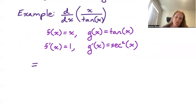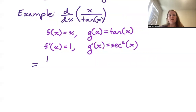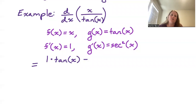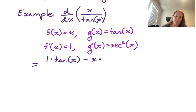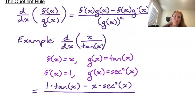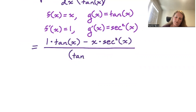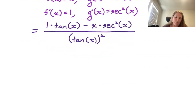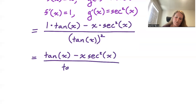Applying the quotient rule, we get 1 times tangent of x minus x times secant squared of x, all divided by tangent squared of x. So the final result is tangent of x minus x times secant squared x, all divided by tan squared x.